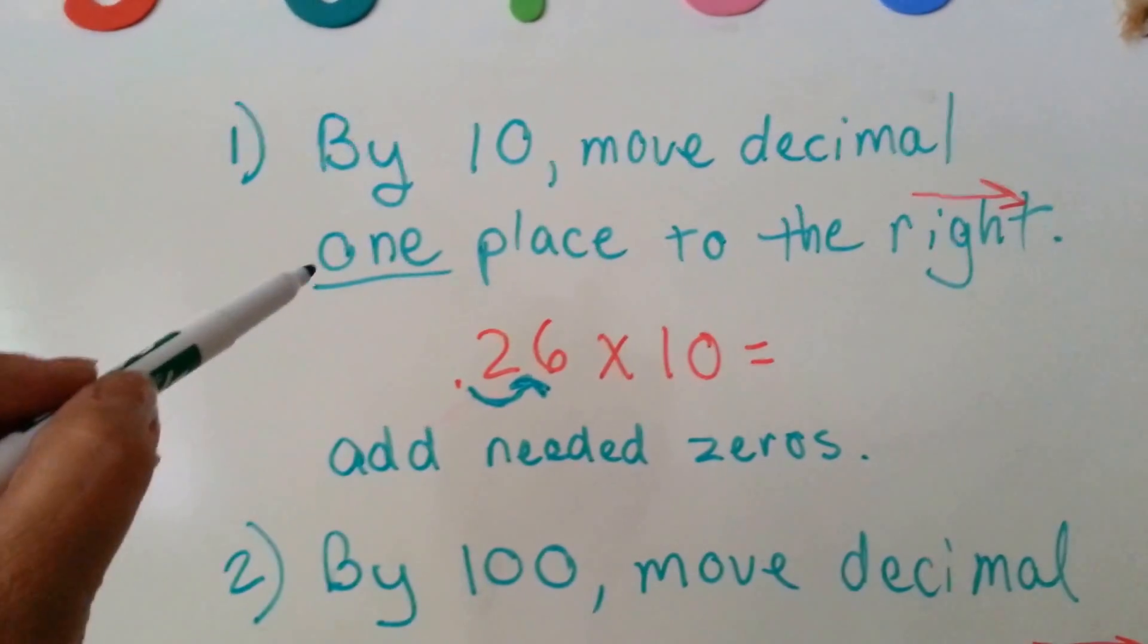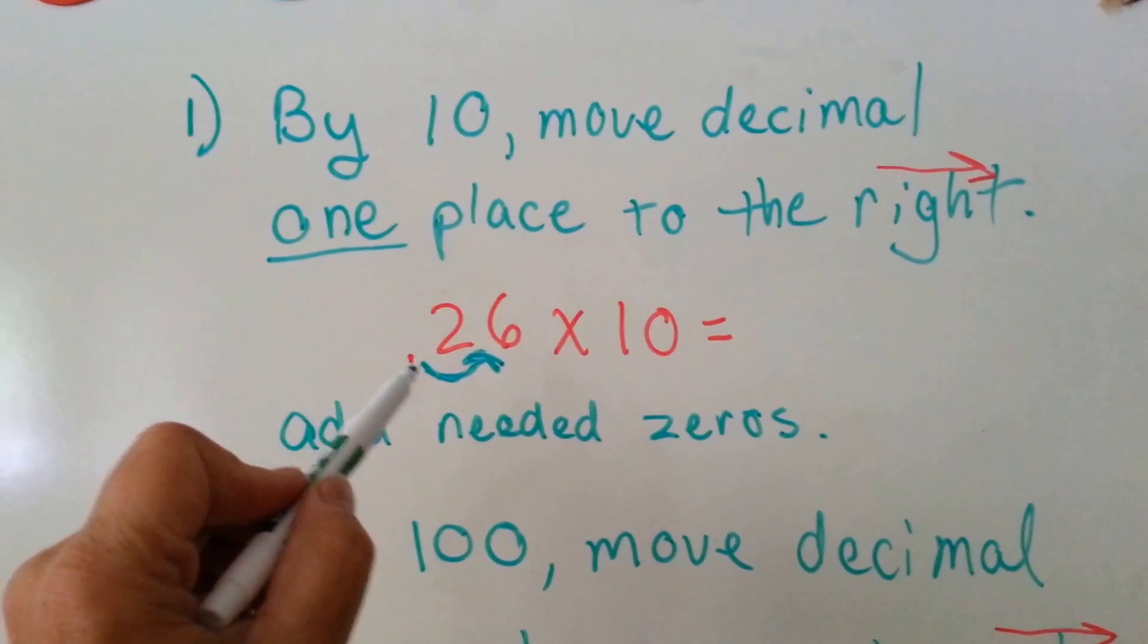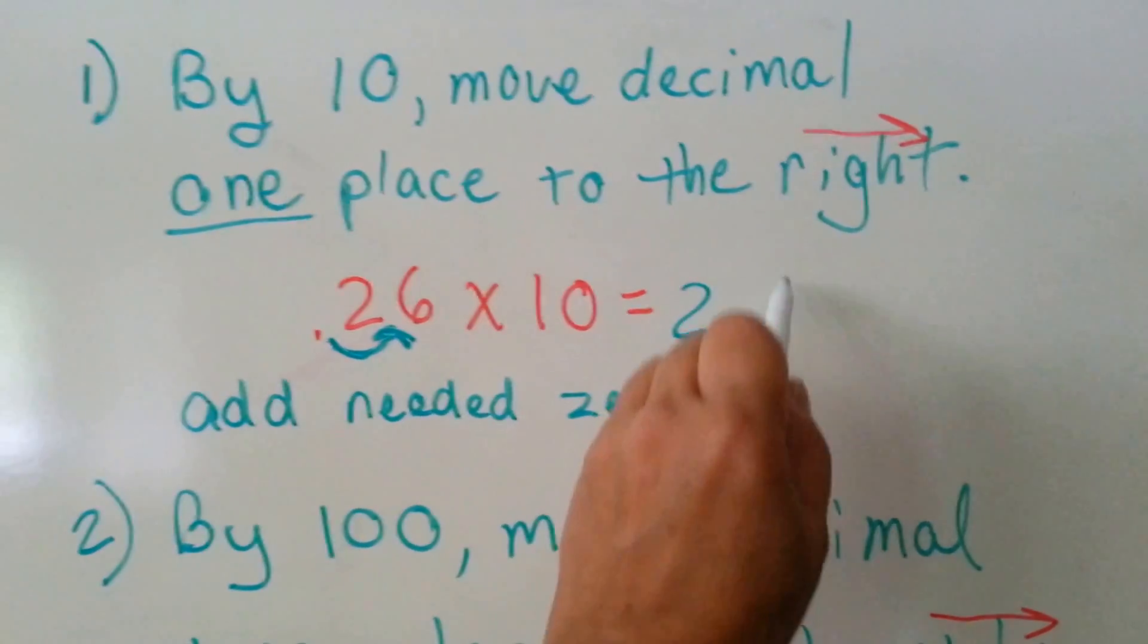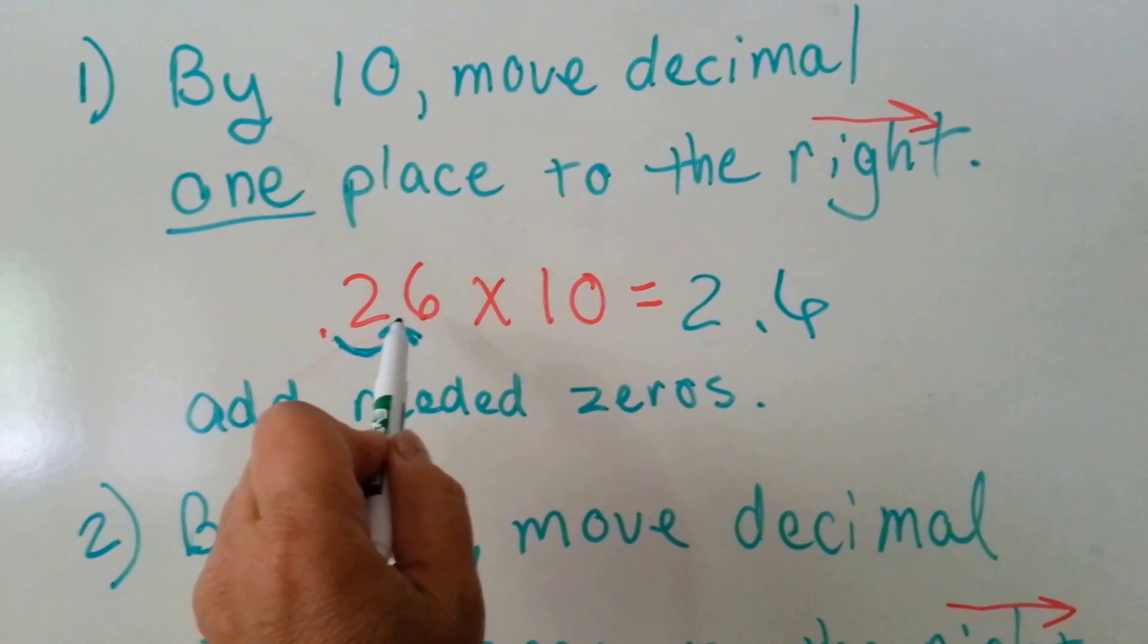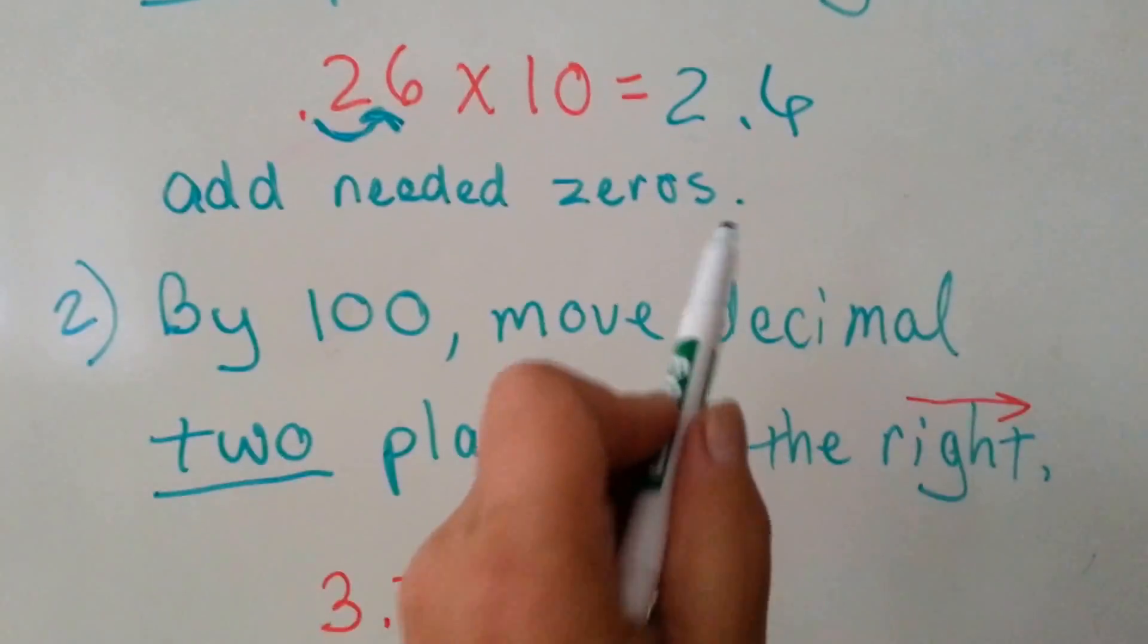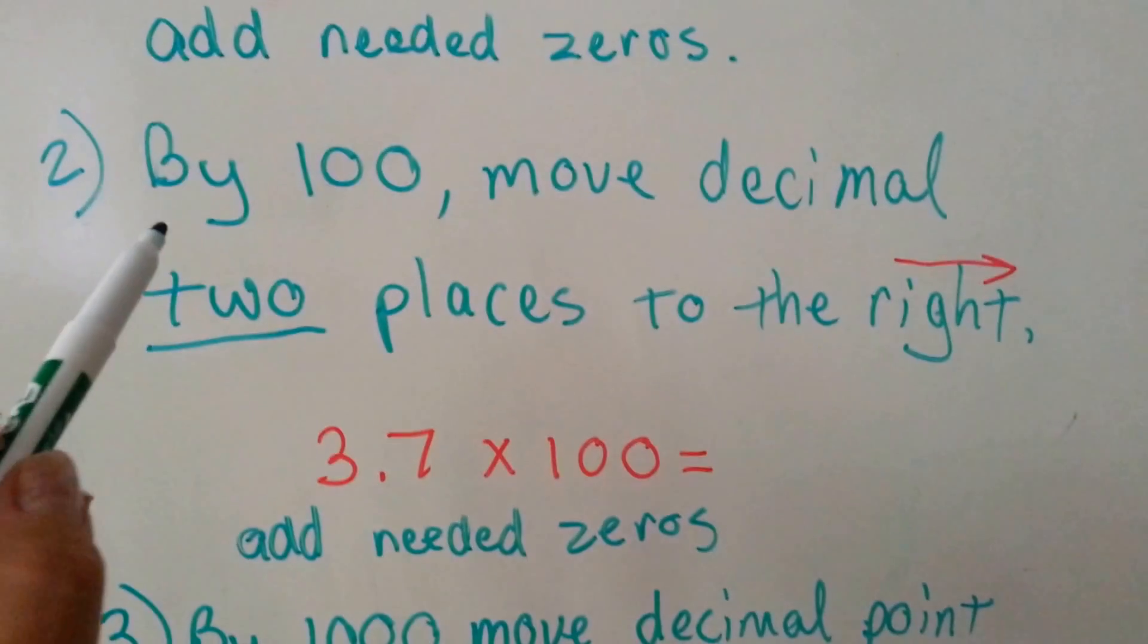When you multiply by ten, you move it one space to the right. 0.26 becomes 2.6, because it gets moved over one space to the right. Then you would add any zeros that were necessary, which in this case you'll see what I mean.